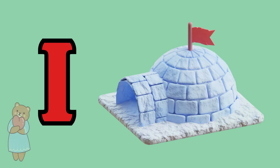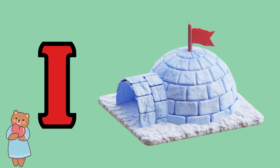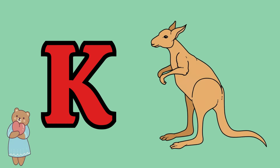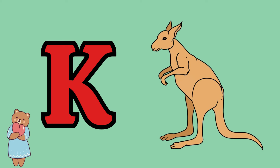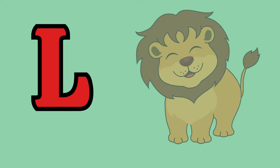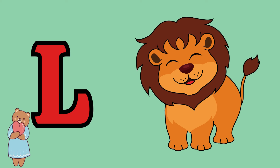I is for igloo, i-i-igloo. J is for jump, j-j-jump. K is for kangaroo, k-k-kangaroo. L is for lion, l-l-lion.